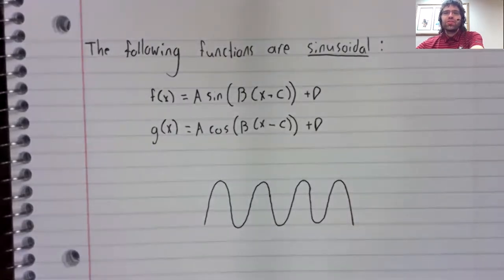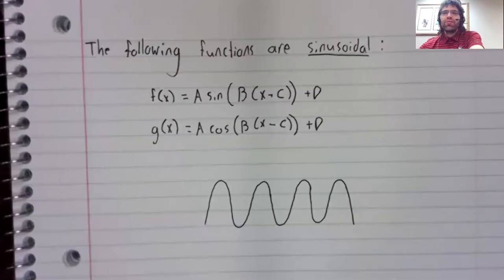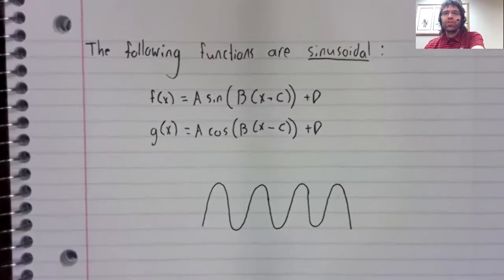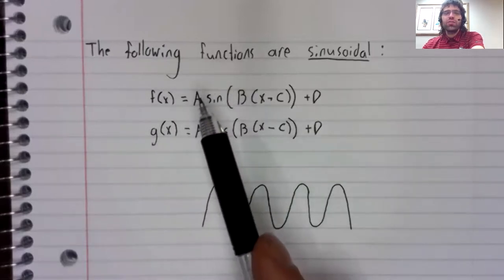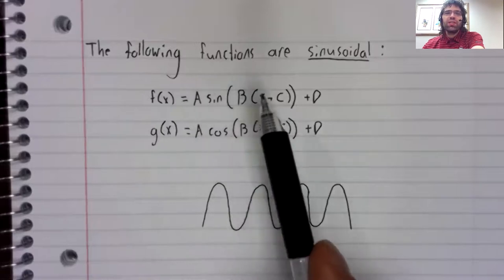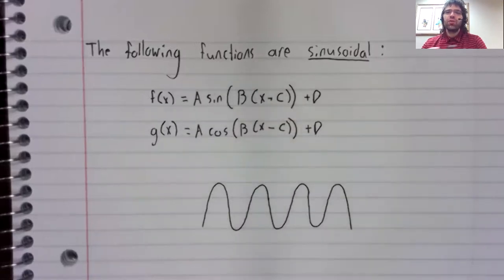That's not to say, however, that every sinusoidal function is literally identical. Naturally, these constants A, B, C, and D are doing something. And our goal in this section is to figure out what each of those constants do.